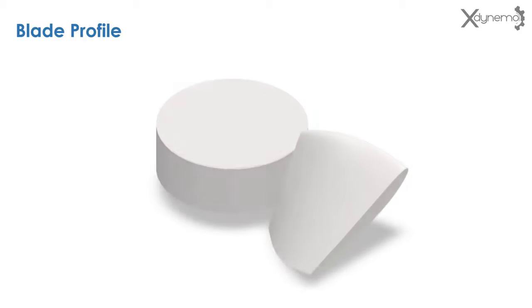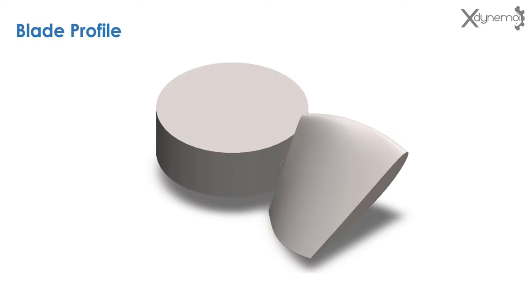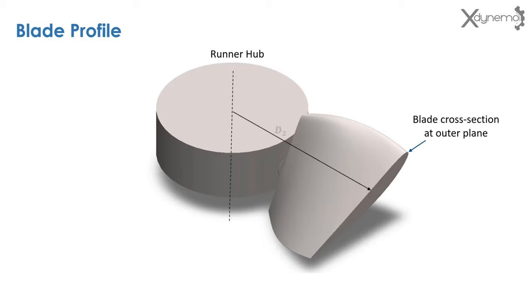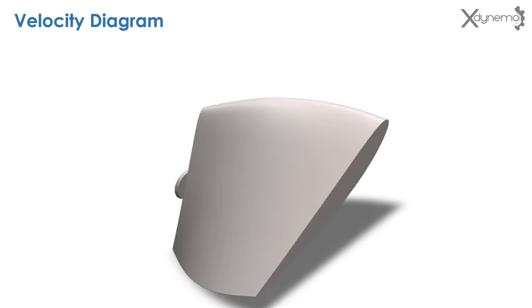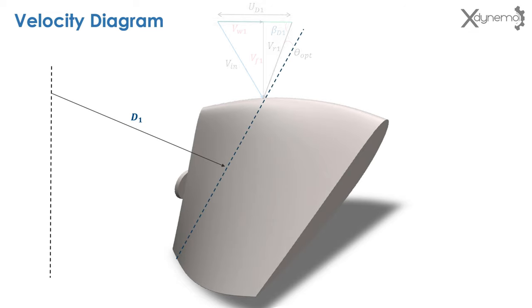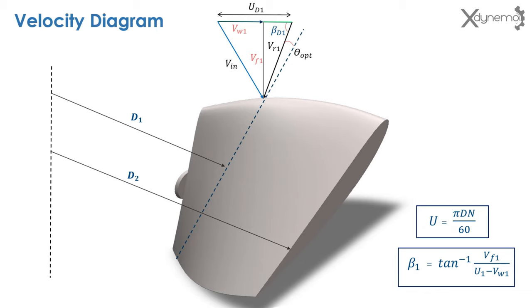Have a look at the Kaplan blade profile — the blade is twisted along its length. To understand the reason behind the twisting of blade profile, consider cross section of the blade at an outer plane located at a distance of D2 from the runner axis. Let us assume the blade has no twist. Consider the blade section at D1 that we discussed previously — here is the velocity diagram at the intersection. Now look at the outer section of the blade at D2. As the blade is not twisted along its length, both sections at D1 and D2 are inclined at the same angle. As D2 is greater than D1, blade velocity at section 2 will be greater than the blade velocity at section 1. Also, the blade angle at section 2 will be lesser than the blade angle at section 1.